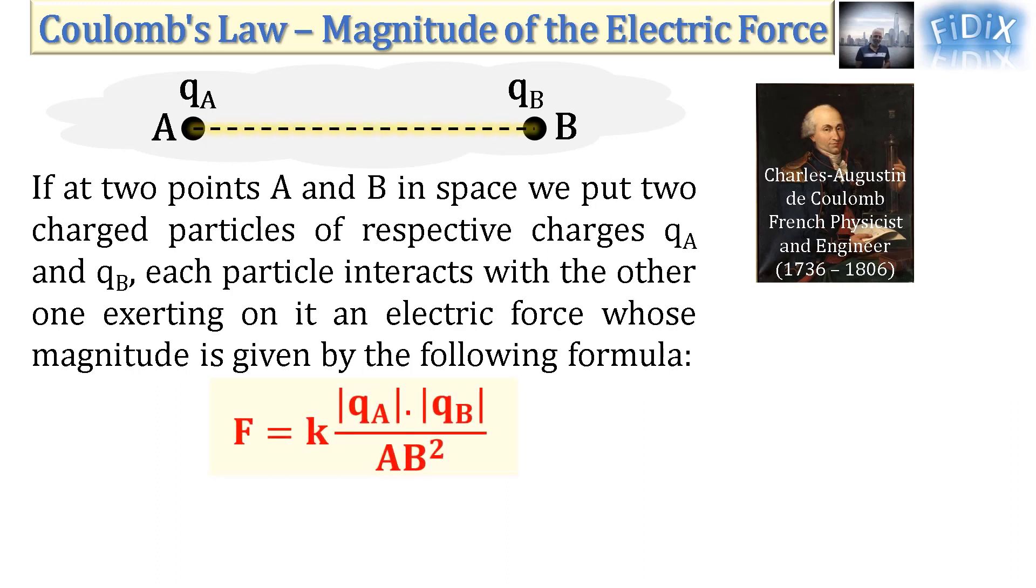is the distance between A and B, and k is Coulomb's constant. k is equal to one over four pi epsilon, where epsilon is a positive value that depends on the medium where the particles are placed and is called the permittivity of the medium.